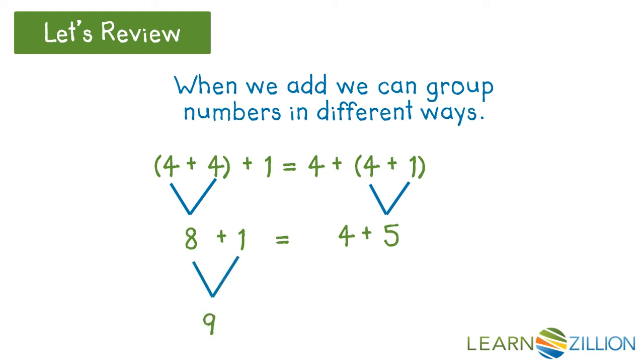8 plus 1 equals 9. 4 plus 5 equals 9. Either way we group them, we get the same sum of 9.